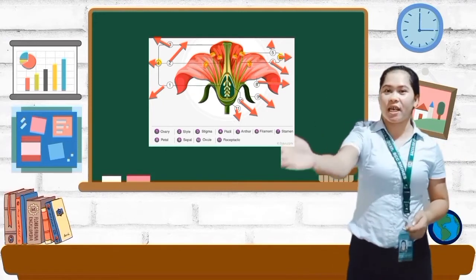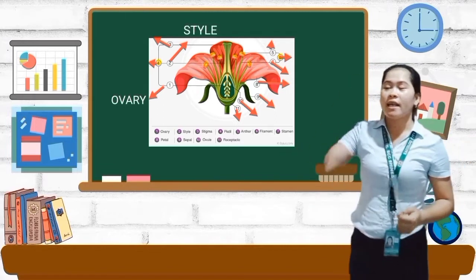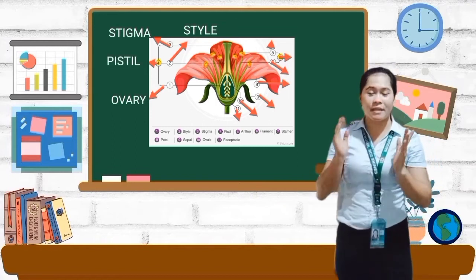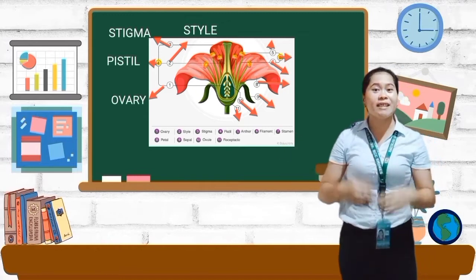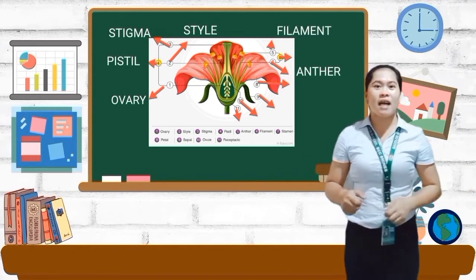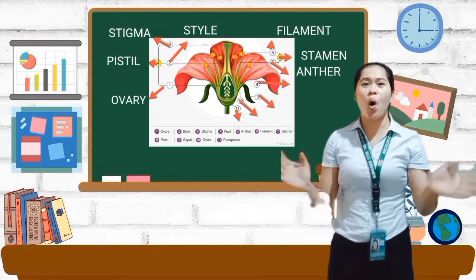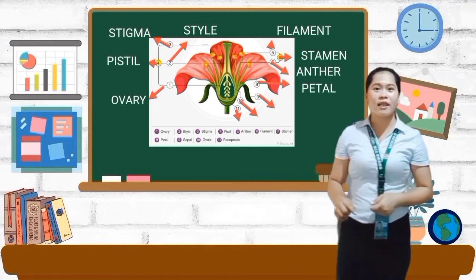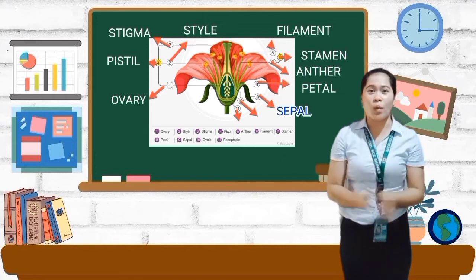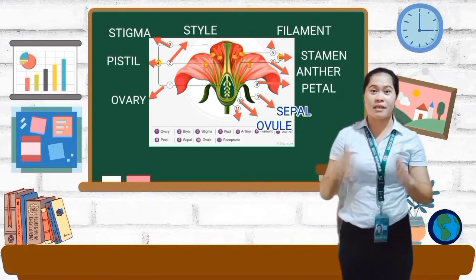Yes, Deji — okay, very good: ovary. Number two, yes Marga — style. Number three, yes Jane — okay, very good: stigma. Number four, yes Maki — okay, very good: pistil. Number five, yes John Mark — okay, very good: anther. Number six, Marjon — okay, very good: filament. Number seven, yes Bea — okay, very good: stamen. Number eight, yes Sophia — okay, very good: petal. Number nine, okay Lestia — okay, very good: sepal. Number ten, yes Joanna — okay, very good: ovule. Last one, yes Grace — okay, very good: receptacle. Okay class, very good! Let's give five claps to ourselves.